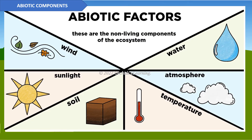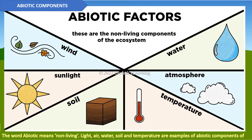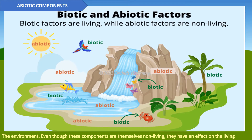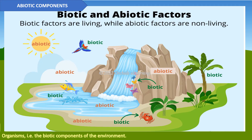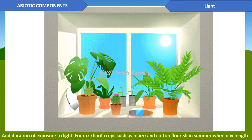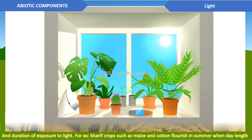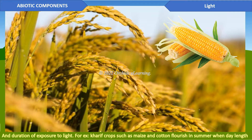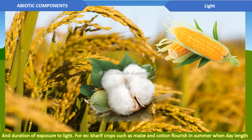Abiotic components: the word abiotic means non-living. Light, air, water, soil, and temperature are examples of abiotic components of the environment. Even though these components are themselves non-living, they have an effect on the living organisms — the biotic components — of the environment. Plants use light to prepare their own food. The growth of plants and flowering are also dependent on the availability and duration of exposure to light. For example, crops such as maize and cotton flourish in summer when day length is more.